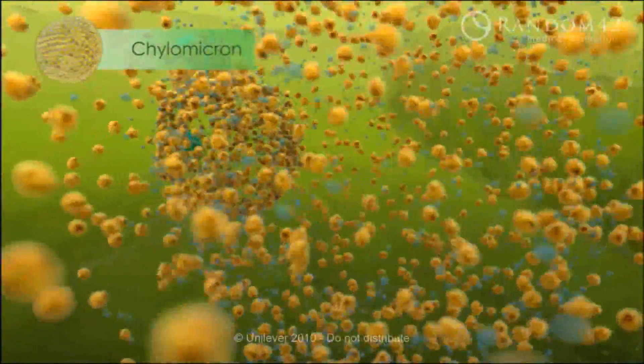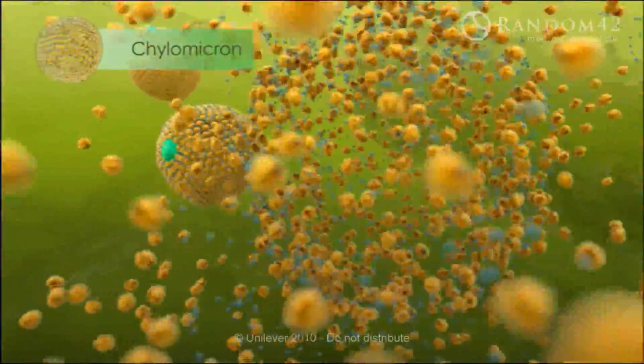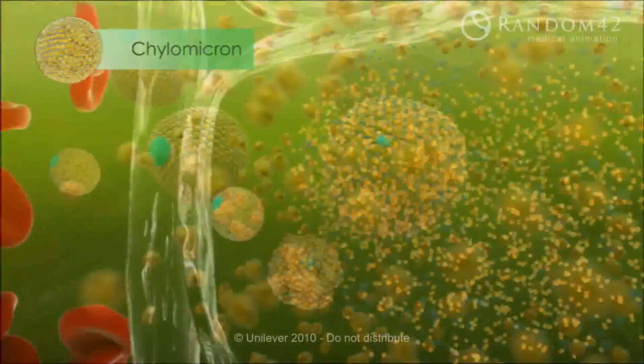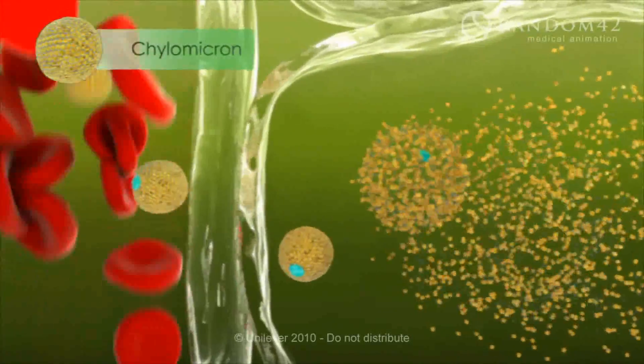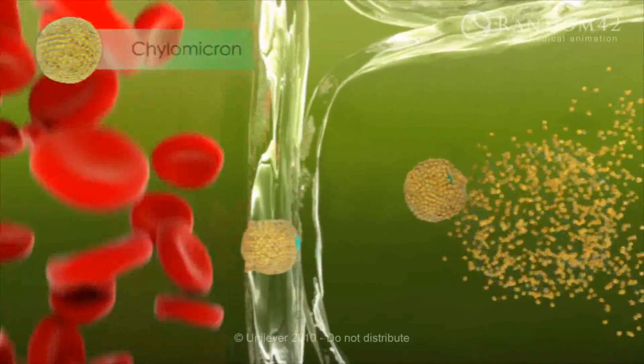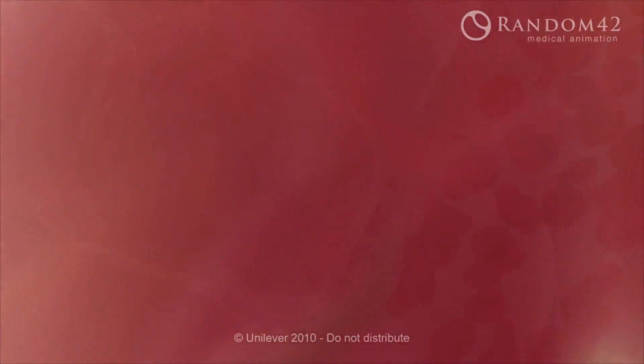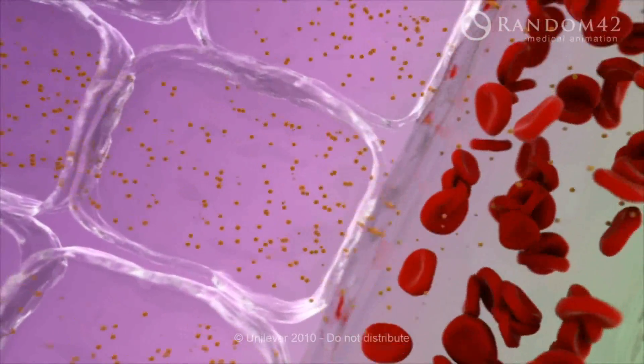Once inside the cell, the micelle contents are repackaged into spherical particles called chylomicrons. The chylomicrons then carry their fatty contents into the bloodstream, where they are delivered to their target tissues, including the liver.